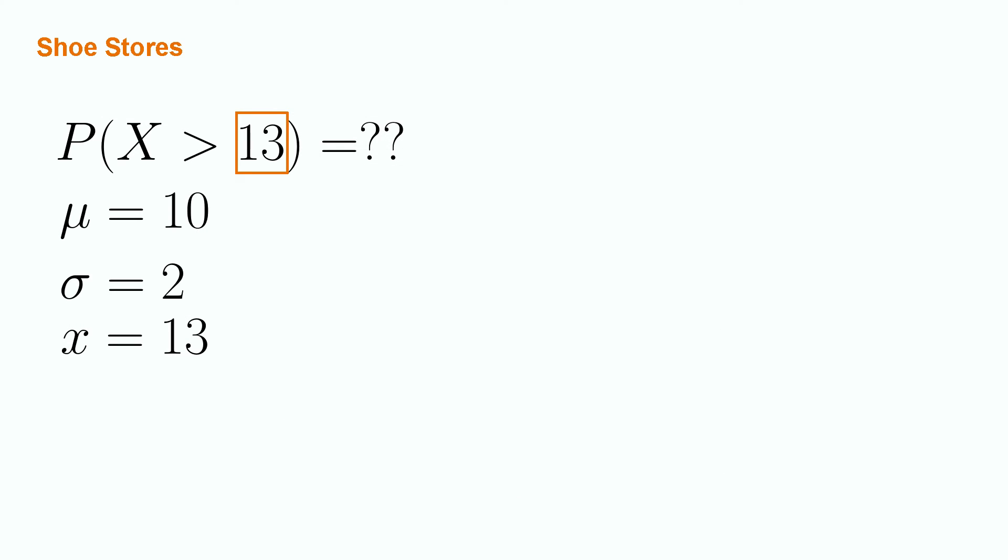The first step to answering this question is to find the appropriate z-score for the problem at hand. Our critical value is that x equals 13. We have the other terms necessary for our z-score calculation already. The necessary equation is z is equal to the quantity x minus mu divided by the standard deviation. Plugging in our numbers, we have that z equals the quantity 13 minus 10 divided by 2. This provides us a final z-score of 1.5.